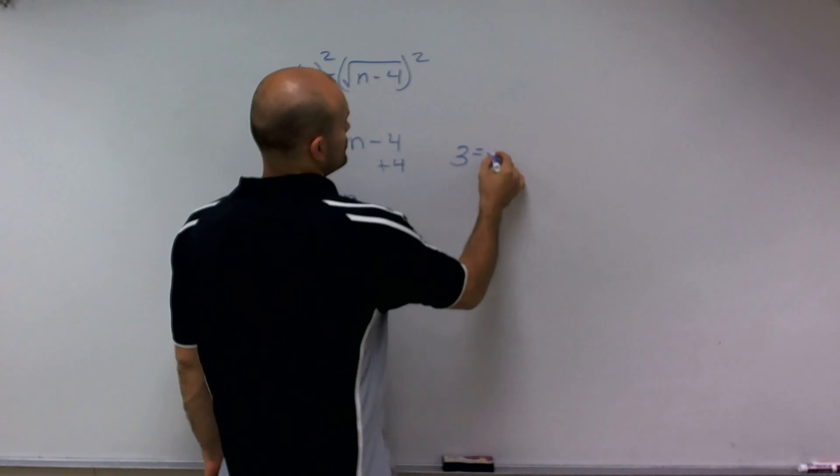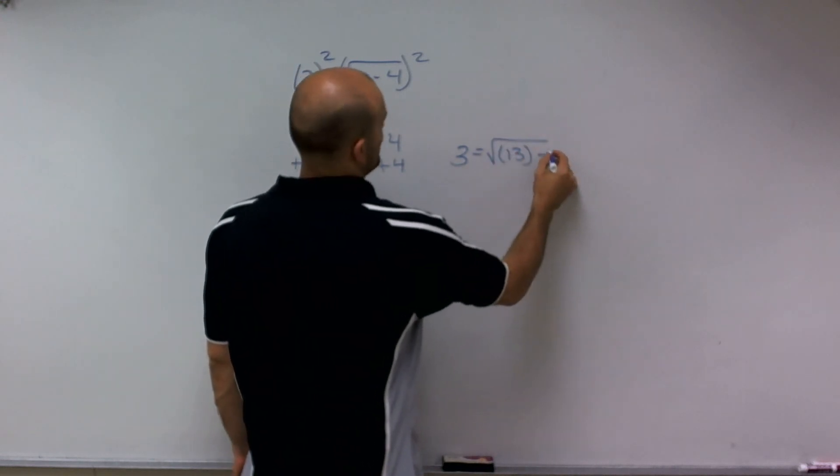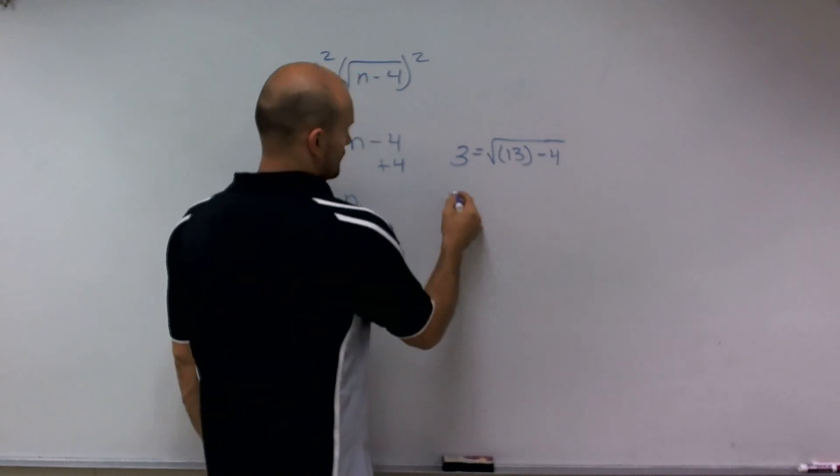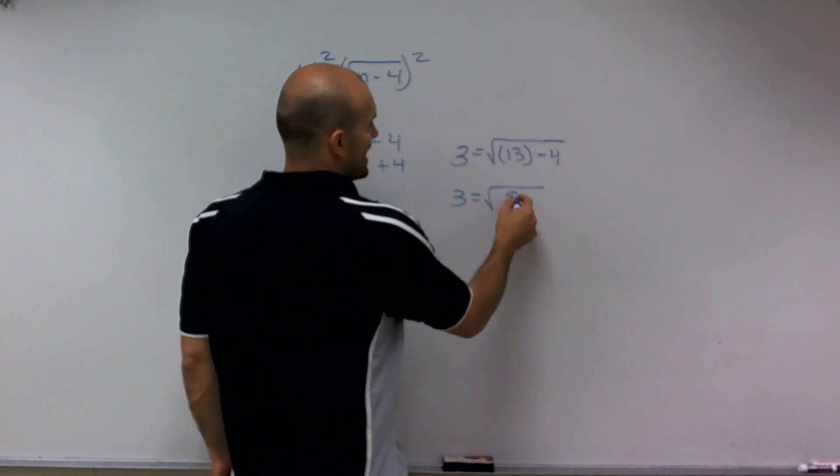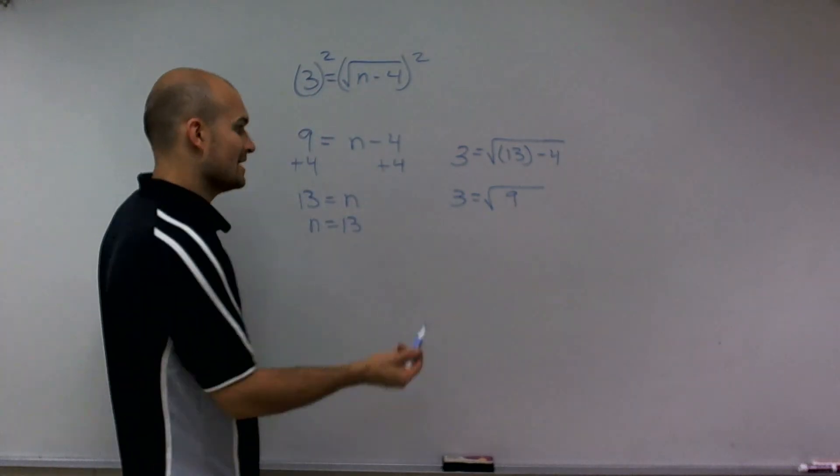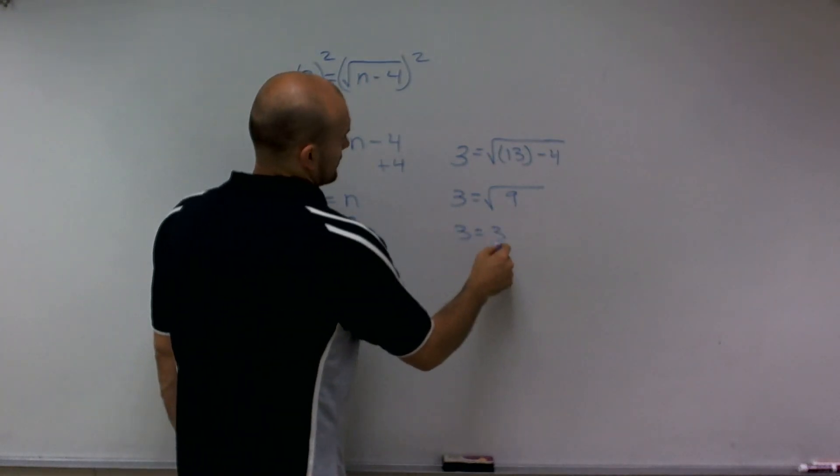3 equals the square root of 13 minus 4. Well, 3 equals the square root... 13 minus 4 provides me 9. And 3 equals the square root of 9 works.